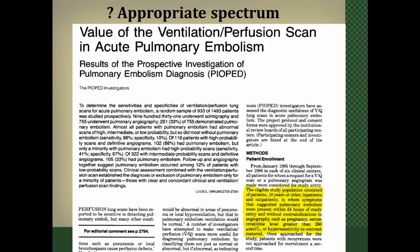So the eligible study population were adults, both inpatient and outpatient, who had symptoms suggestive of pulmonary embolism and who had no contraindications to undergoing testing. Is this who we would use this in? I think so. It was a fairly broad spectrum — adults of all ages, both inpatients and outpatients — including groups with other problems that could be confused with pulmonary embolism. So I think it meets the criteria of an appropriate spectrum of patients.